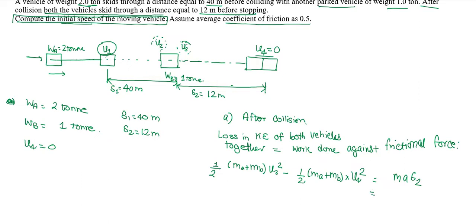The frictional force equals mass into acceleration, and acceleration equals friction coefficient (μ) times g. So the equation becomes: (1/2)(MA + MB)(B3 squared minus B4 squared) equals (MA + MB) times μ times g times S2. Since B4 is zero, this simplifies to (1/2)(MA + MB)(B3 squared) equals (MA + MB) times μ times g times S2.